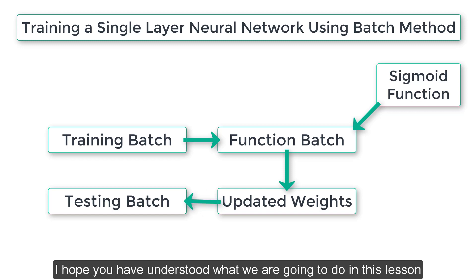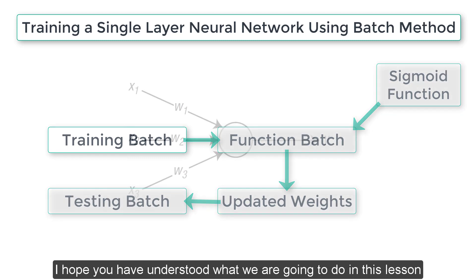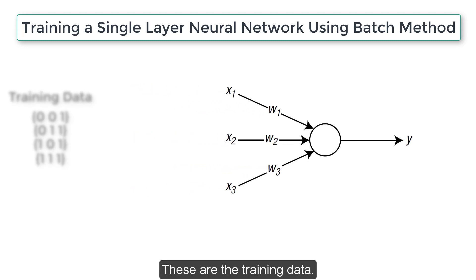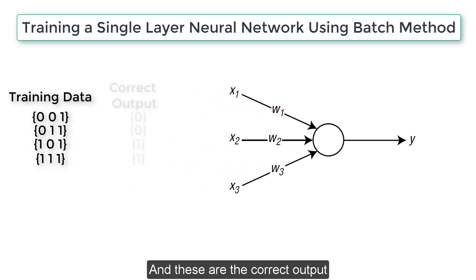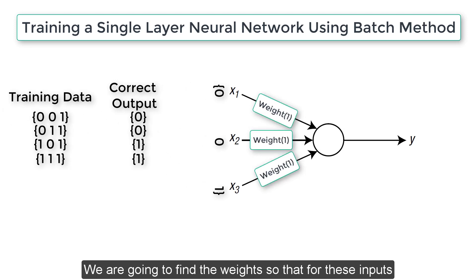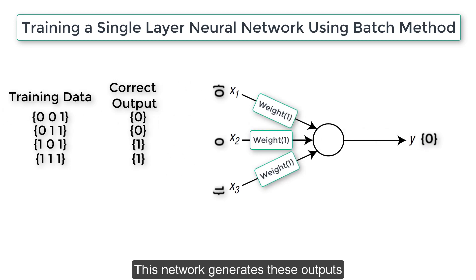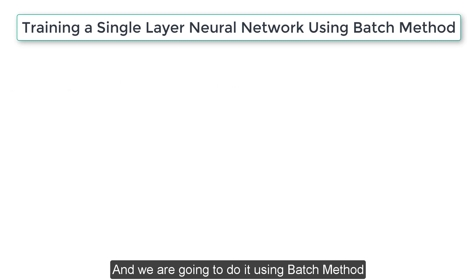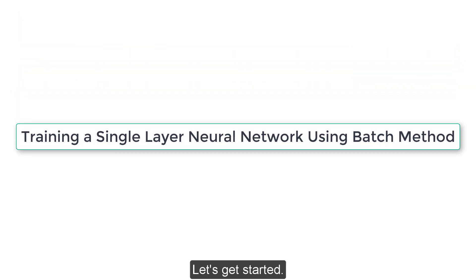This is our single layer neural network. These are the training data and these are the correct outputs. We are going to find the weights so that for these inputs, this network generates these outputs — and we are going to do it using the batch method. Let's get started.